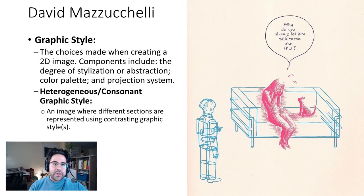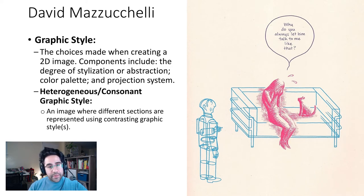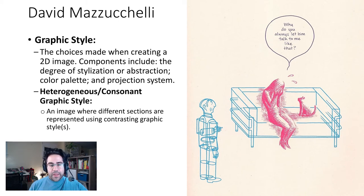One of the main things we'll be talking about this week is graphic style, and generally speaking those are the choices made when creating a two-dimensional image. Some components of graphic style include the degree of stylization or abstraction, the color palette, and the projection system used.